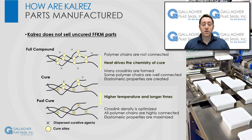Next, we are going to discuss some important characteristics of all elastomeric sealing devices, such as hardness, tensile strength, elongation, compression set, glass transition temperature, brittle point, permeation rate, and volume swell. We will elaborate on how each of these characteristics is measured.